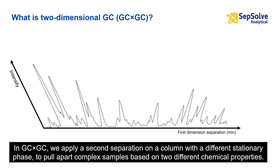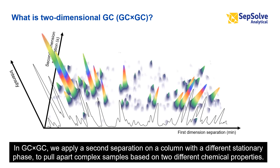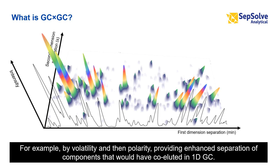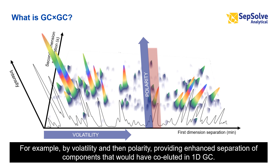In GC×GC, we apply a second separation on a column with a different stationary phase, to pull apart complex samples based on two different chemical properties — for example, by volatility and then polarity — providing enhanced separation of components that would have co-eluted in 1D-GC.